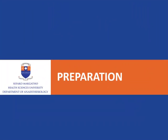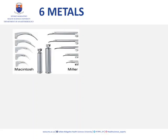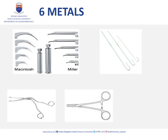Let's look at preparation — preparing your equipment, monitors, and medication. It's useful to remember the six metals and six plastics mnemonic. For the six metals: one and two are your laryngoscope handle and blade — make sure you have more than one size available. Three is your introducer. Four is McGill's forceps, in case you need to remove foreign objects or pass a nasogastric tube. Five is an artery forceps to secure your breathing circuit after intubation. Six is a pair of scissors, which are always useful.